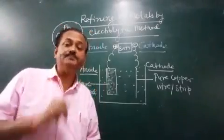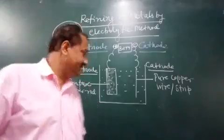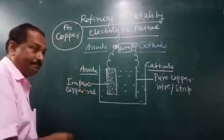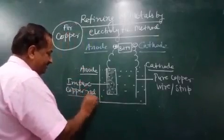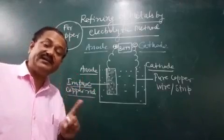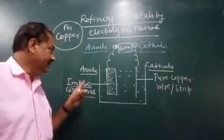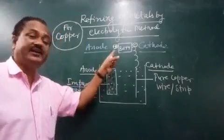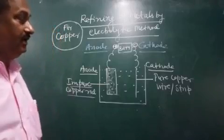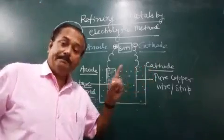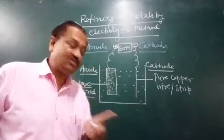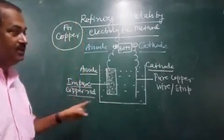Now some very important points. The first point is that the metal which has to be purified is made the anode — the impure metal or the metal which has to be purified is made anode. As you know, anode is positive.